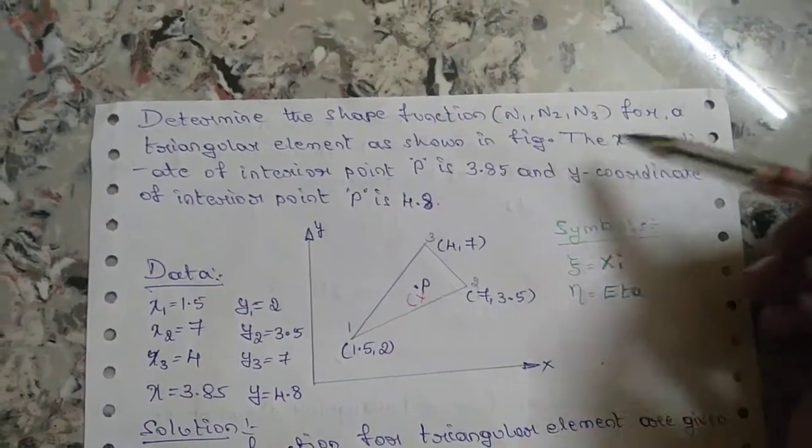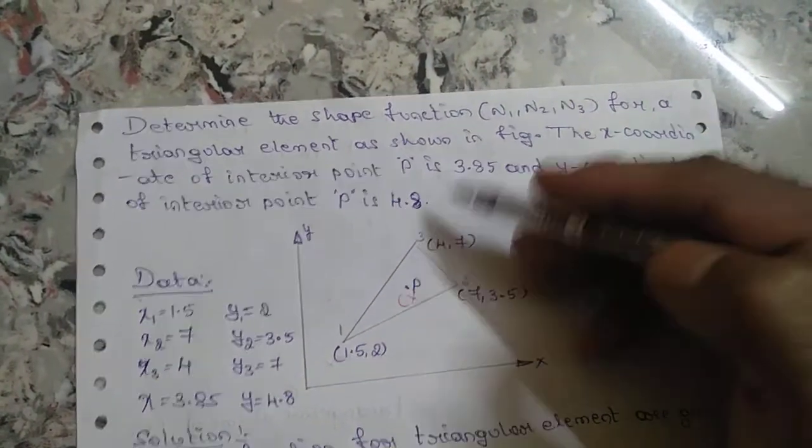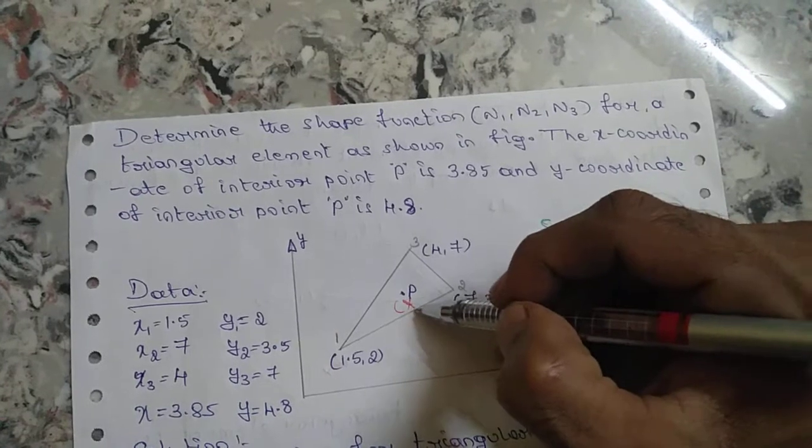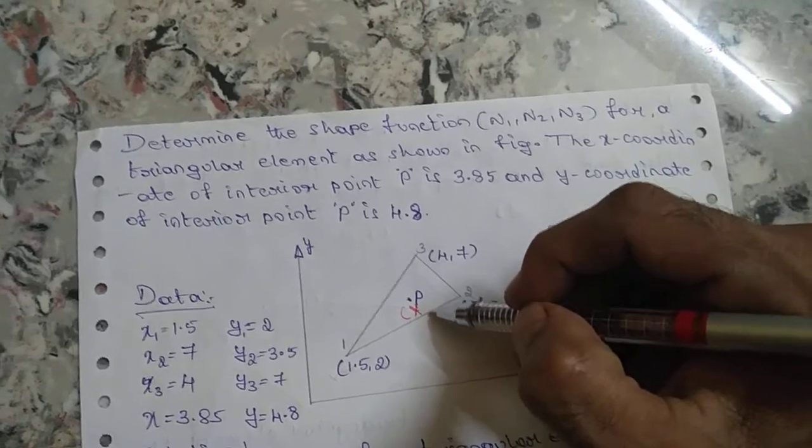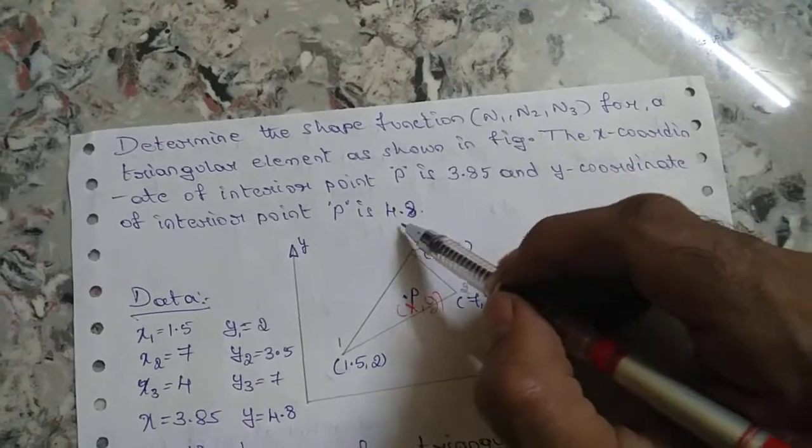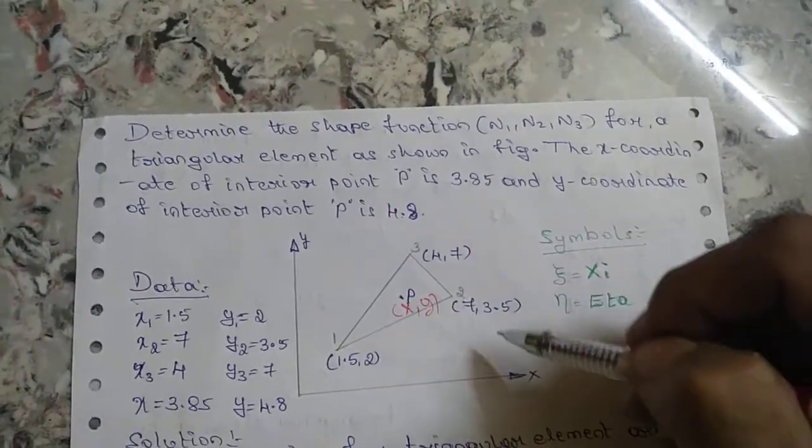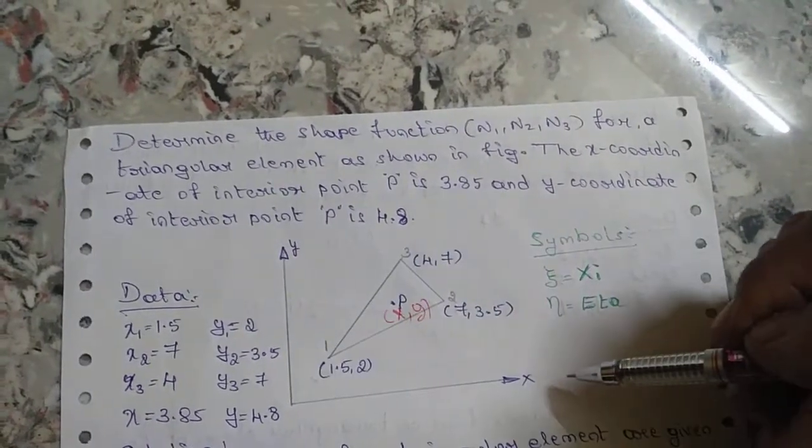The x-coordinate of the interior point P is 3.85 and the y-coordinate is 4.8. This is the proposed sketch: y-axis, x-axis, global coordinates.